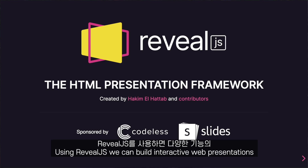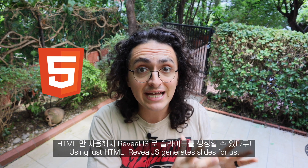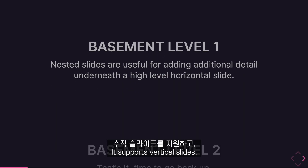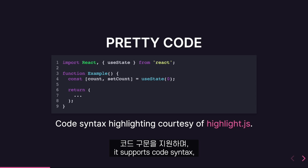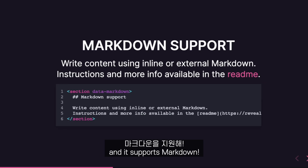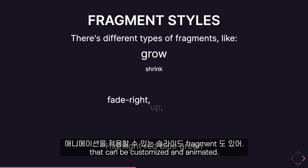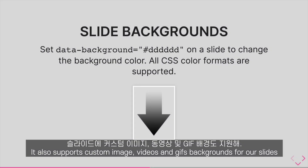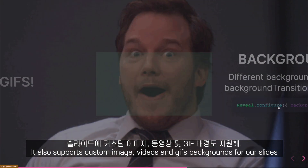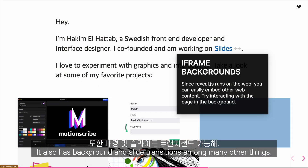Using Reveal.js, we can build interactive web presentations that have lots of features. Using just HTML, Reveal.js generates slides for us. It supports vertical slides, code syntax, code animations and highlighting, element animations, it supports markdown, and it has slide fragments that can be customized and animated. It also supports custom image, videos, and GIFs backgrounds for our slides. It also has background and slide transitions, among many other things.